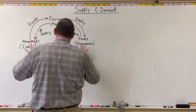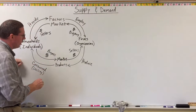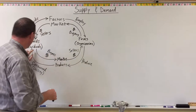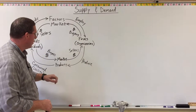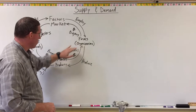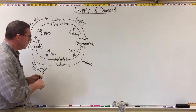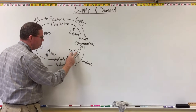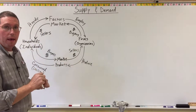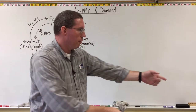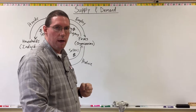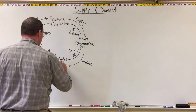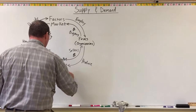What's happening in the lower part of the circular flow diagram is when buyers and sellers come to the product market, the buyers want to buy products produced by the firms, and the sellers — the firms — want to sell the products they produced. The buyers hand the sellers money, and the sellers hand the buyers a product. We call that a market transaction.